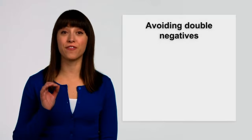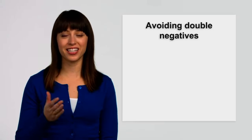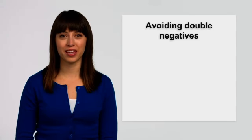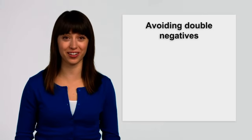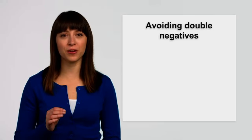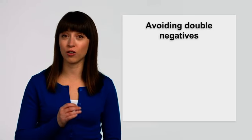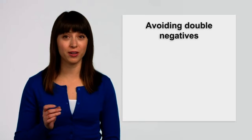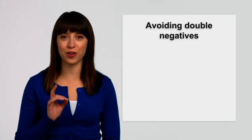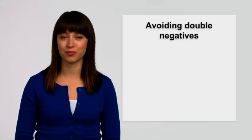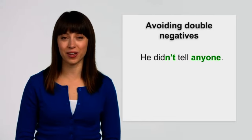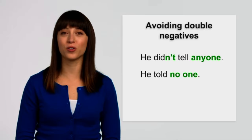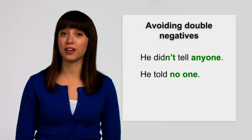Double negatives are very confusing. Take this example. He didn't tell no one his secret. That means he told someone. Confusing, right? It's better to use didn't tell or no one but not both together in the same sentence. So I can say, he didn't tell anyone or he told no one.